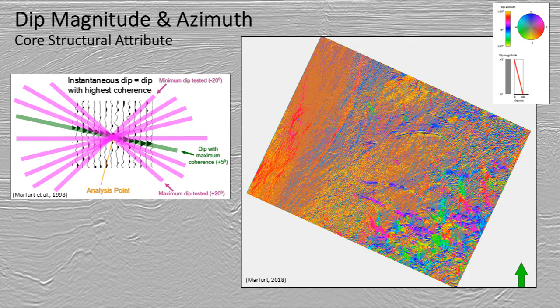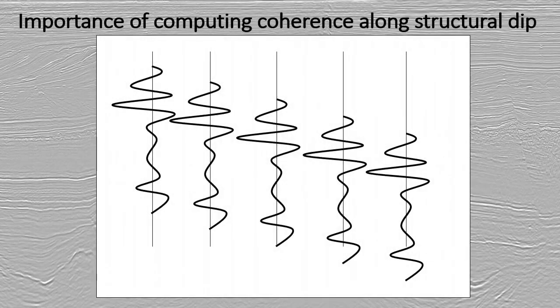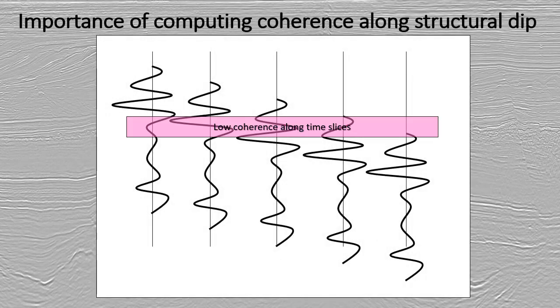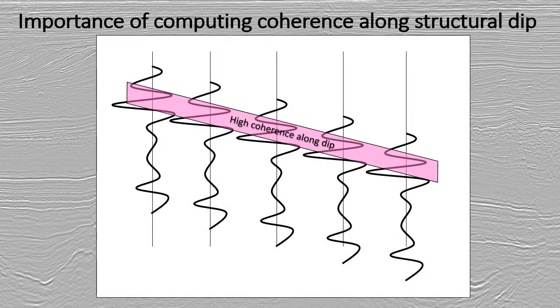The first attributes you want to calculate are dip magnitude and azimuth, and these allow you to align your algorithms with the dipping structure of your subsurface. It's really important to consider dip when running all of your algorithms, because if you calculate dip across a certain time you may not get the same coherence patterns that you would if you account for the dipping structure of the subsurface.